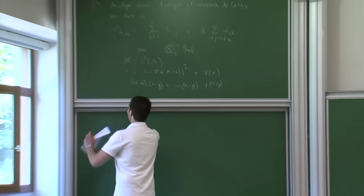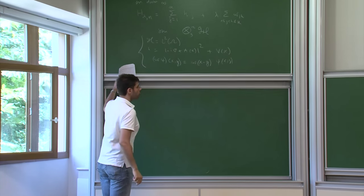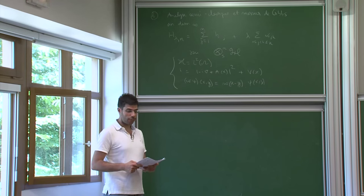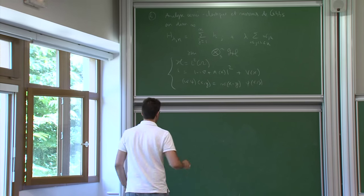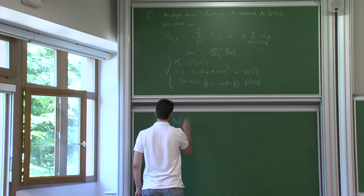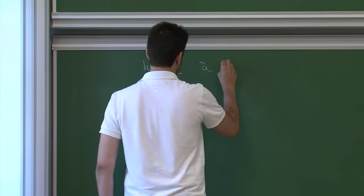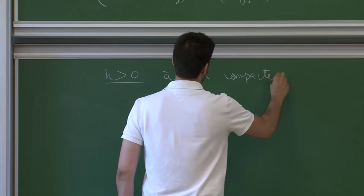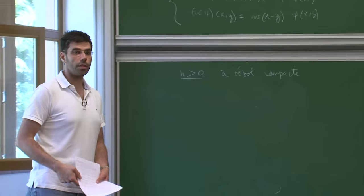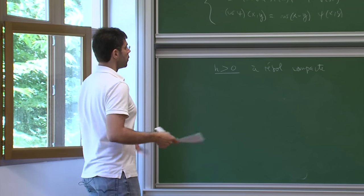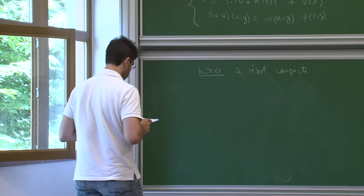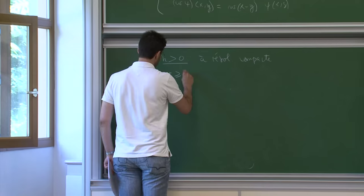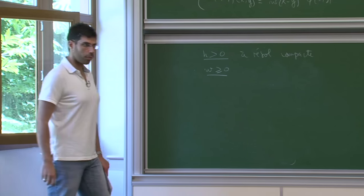Ça c'est la situation concrète à laquelle on s'intéresse. Mais le théorème est abstrait et marche pour tout Hamiltonien qui s'écrit sous cette forme. On supposera toujours que H est défini positif et à résolvante compacte — c'est pour ça qu'on pense à Ω un domaine borné, sinon il faut que V tende vers l'infini assez vite. Et W, on va regarder le cas défocalisant, c'est-à-dire on demande que W soit un opérateur positif.